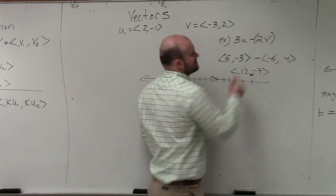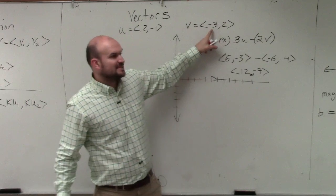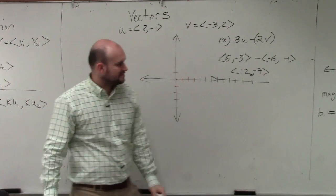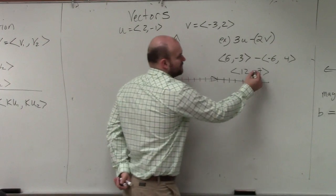What I did was multiply it by 2 without the negative, so I kept it as a subtraction problem. If you multiply just by 2, 2 times this is negative 6, 4. Then I subtracted it. So that should be 12, negative 7.